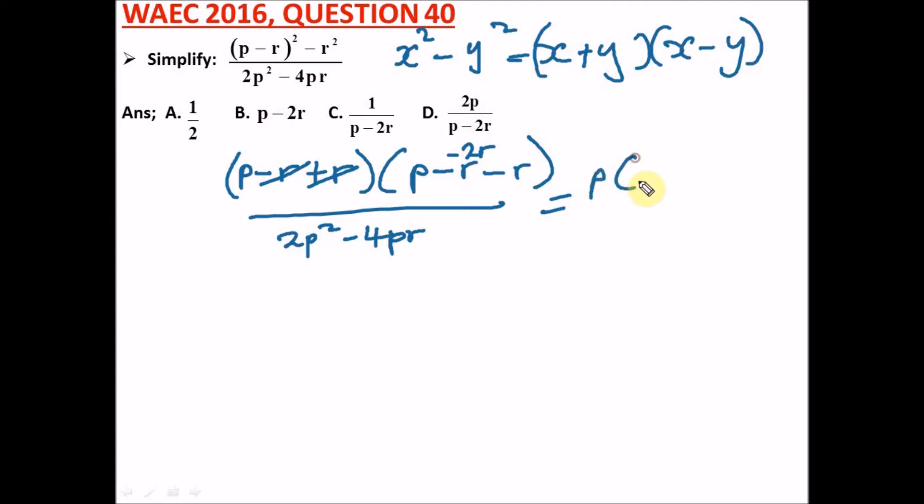Let's put this under here, p squared minus 4pr. So in opening this bracket we have, this will give us p squared minus 2pr divided by 2p squared minus 4pr.